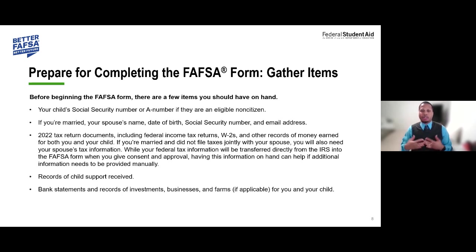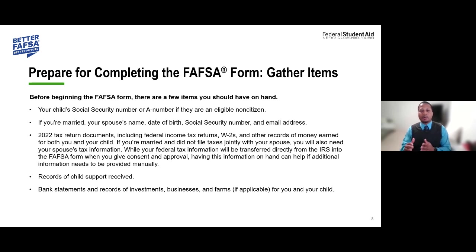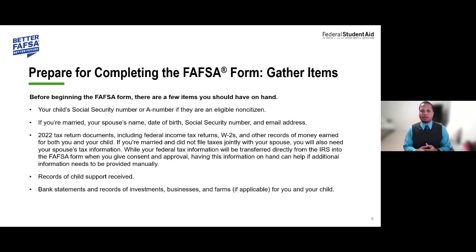When preparing to complete the FAFSA form, the first thing to do is gather your items — your student's social security number, or an A-number if you are an ineligible noncitizen. The information you provide must match with the Social Security Administration. If you're married, provide your spouse's name, date of birth, social security number, and email address. It's also good to have your 2022 tax returns handy, since the 2024-25 FAFSA uses prior-prior year tax returns.